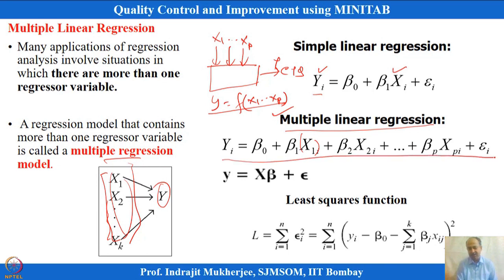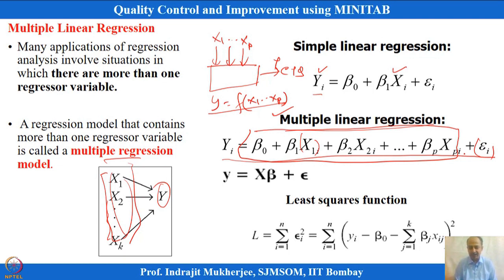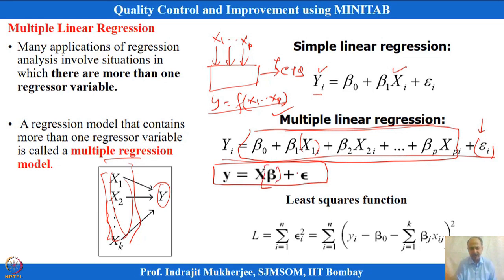We want to generate the functional relationship between y and all variables x1 to xp using regression. The general expression is: y = beta_0 + beta_1*x1 + ... + beta_p*xp + error. There will always be some error between actual and predicted values. In matrix notation, the beta coefficients (beta_0 to beta_p) are estimated using least squares by minimizing the sum of squared errors through partial derivatives.